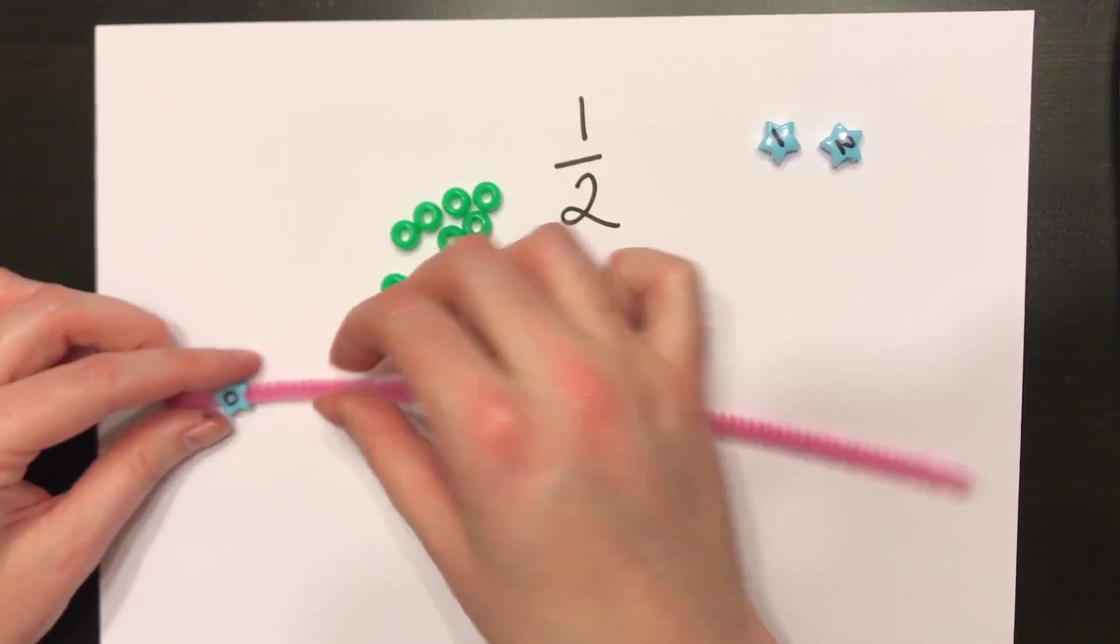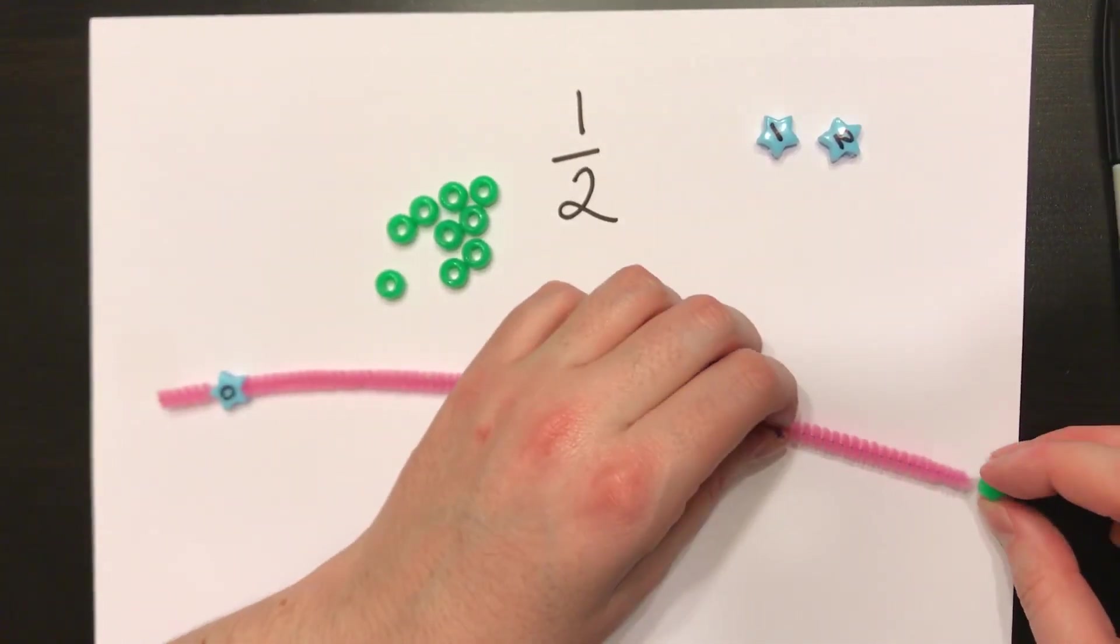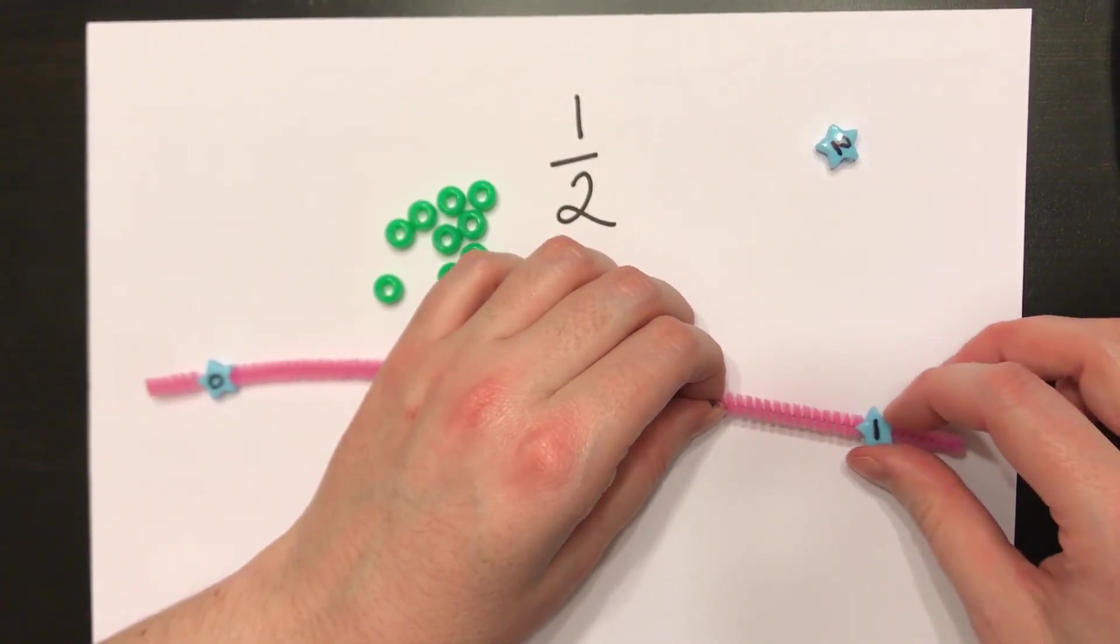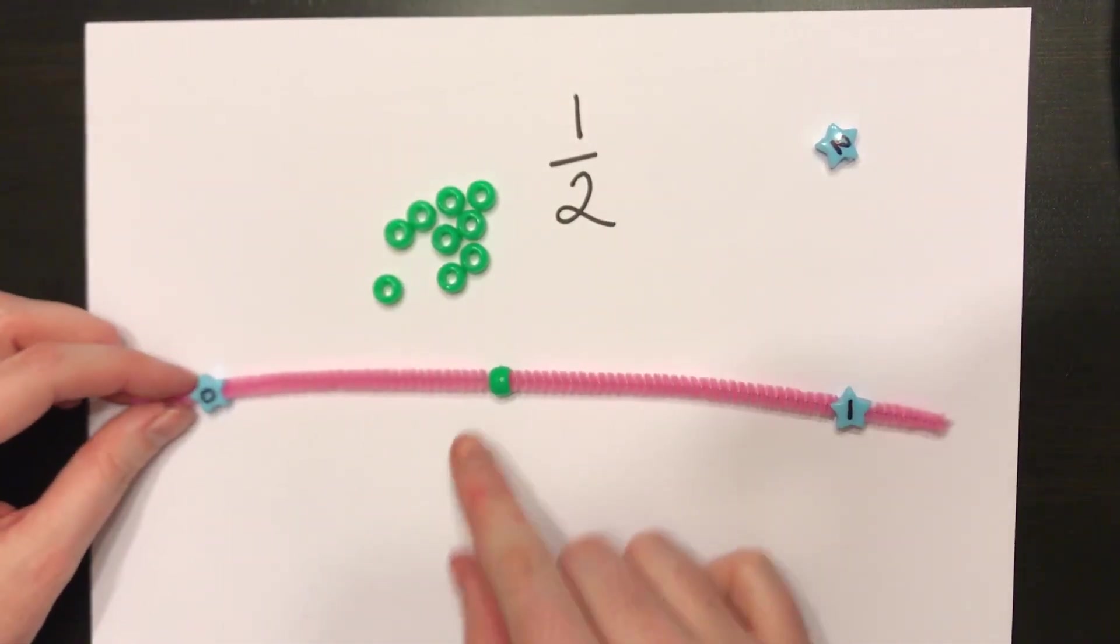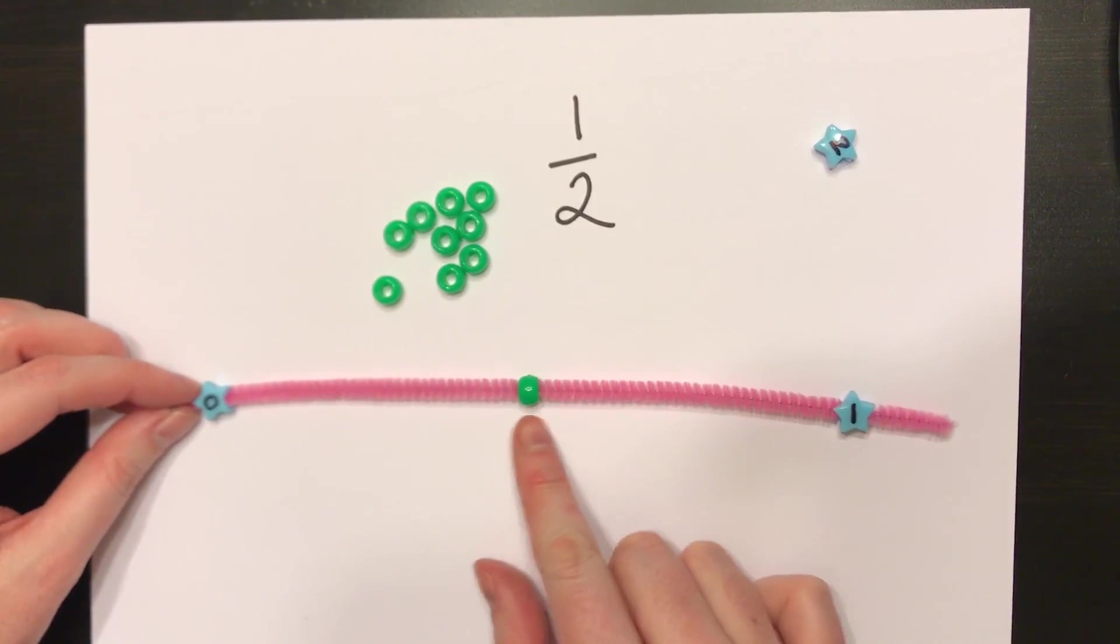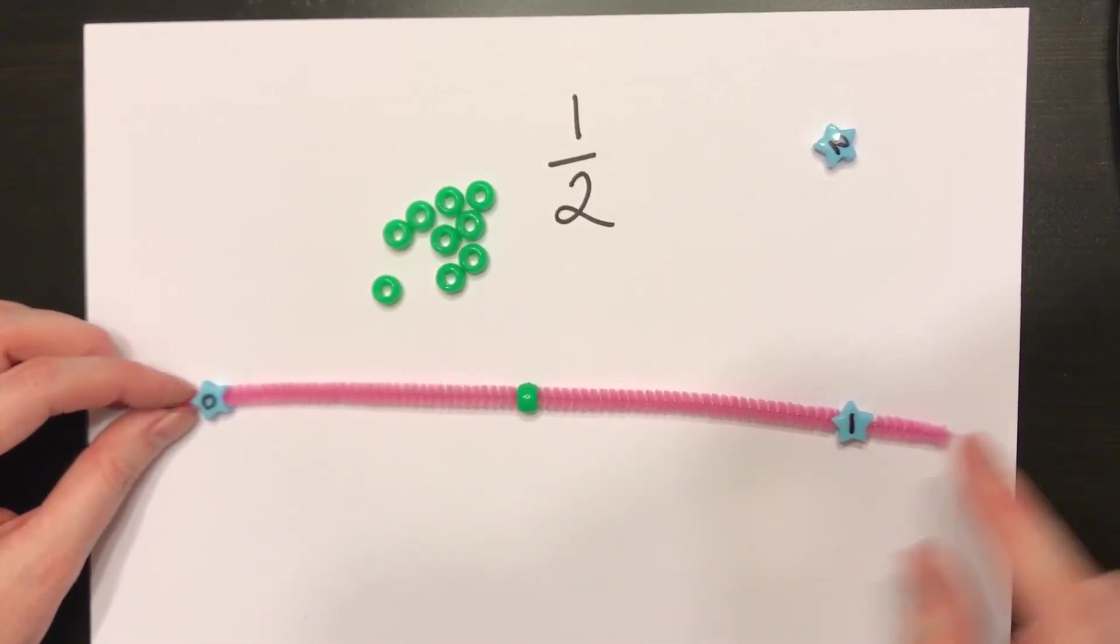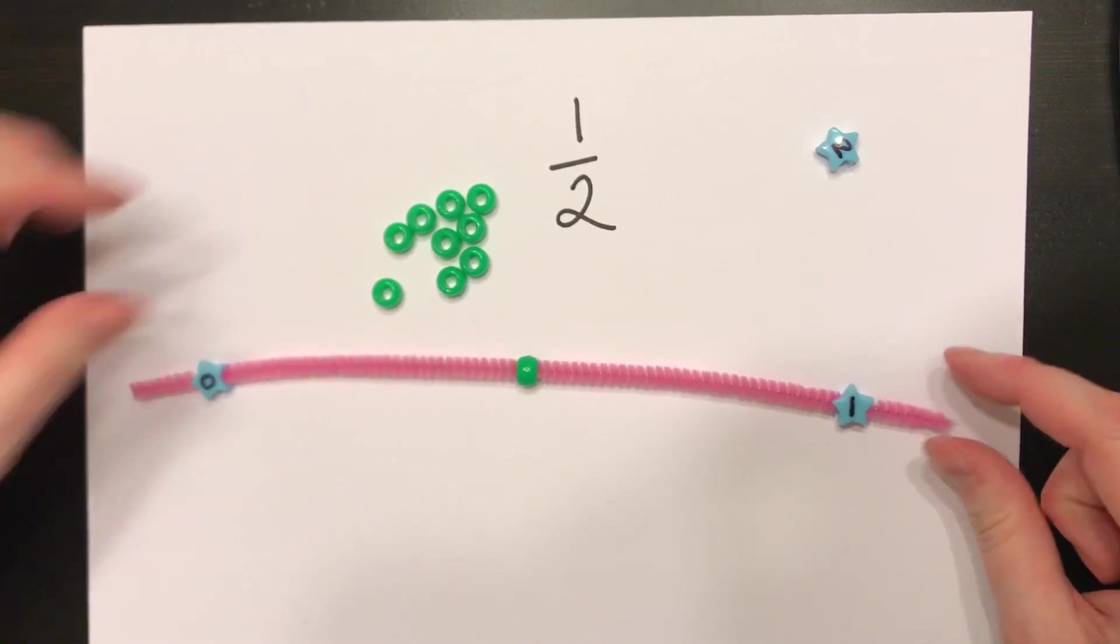I'm going to start with my 0 bead. I'm going to take one regular bead, that should break it into two pieces, and I'm going to end with my 1 bead, my 1 whole number. I'm going to move my tick mark until I find that it's between the 0 and the 1, and I have two equal parts, which I would say I have about two equal parts right there.